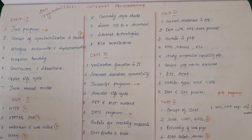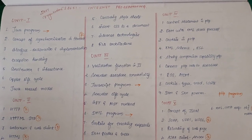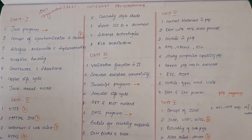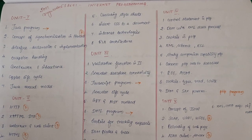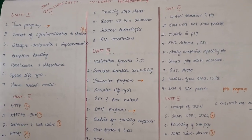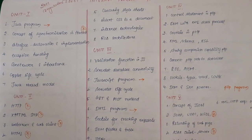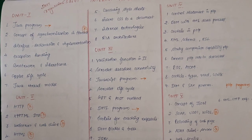In this video, we will talk about Internet Programming, CS8651. The 2017 Regulation important questions. So, in Unit 1, Java is asked.